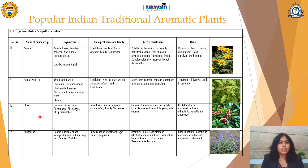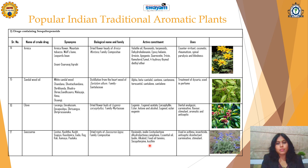Next drug is Saussurea, which is called as Kostas or Kushti. It is the dried roots of Saussurea lappa, Family Compositae, which contains various types of sesquiterpenoids along with alkaloids and other ingredients like dihydrolactones. It is useful in asthma, used as an anti-insecticide, antiseptic, disinfectant, carminative, and stimulant.